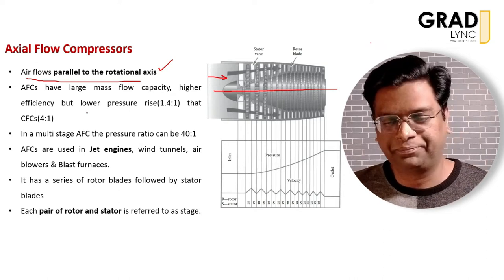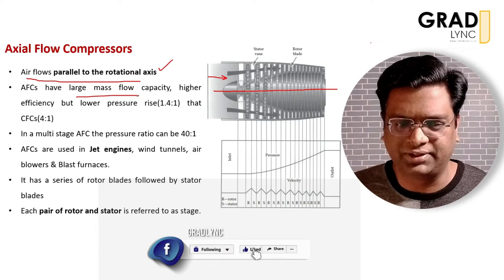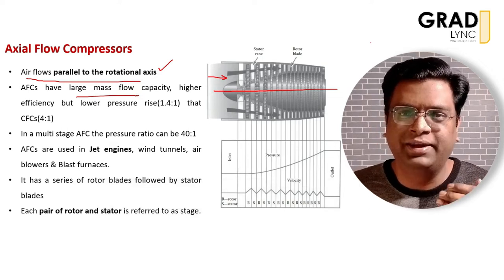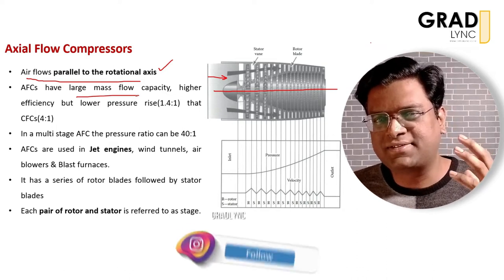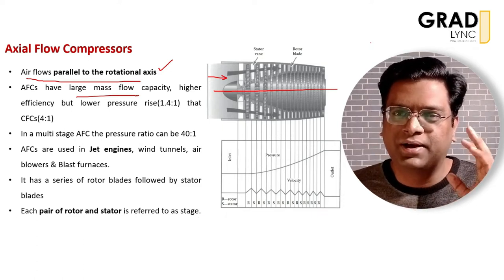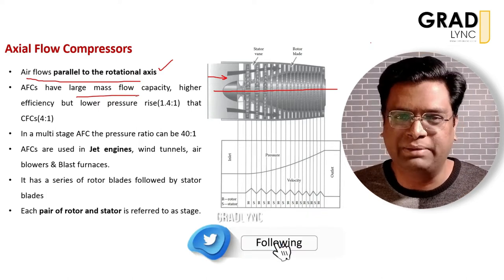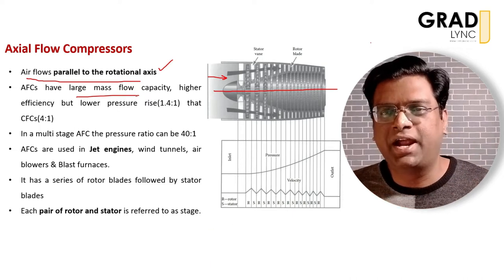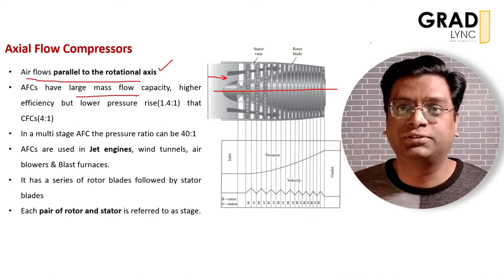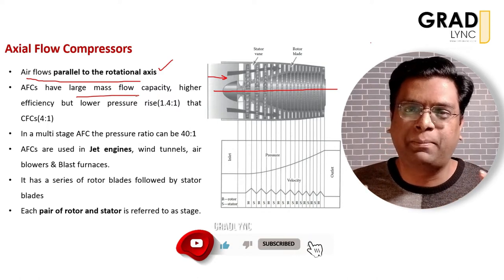The advantage of an axial flow compressor for aircraft applications is that it has large mass flow capacity and higher efficiency. The only drawback is the lower pressure rise per stage. However, because the air doesn't change direction during the compression process, losses are minimal, so you can add multiple stages — 8, 10, or 20 stages — to achieve higher pressure ratios.